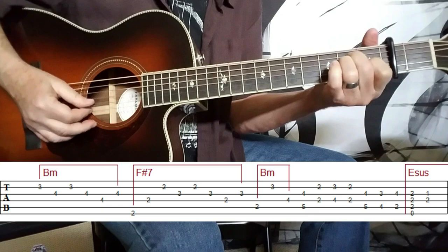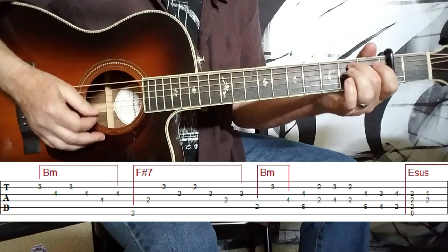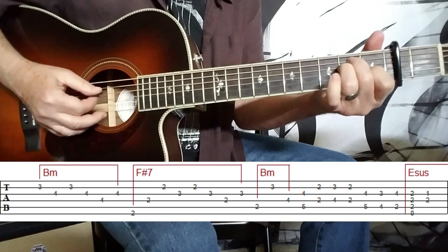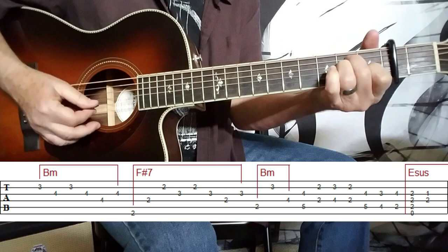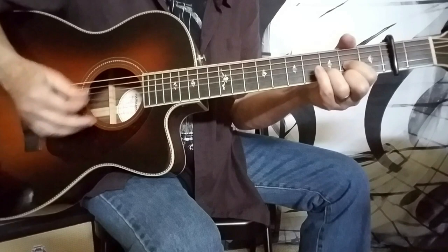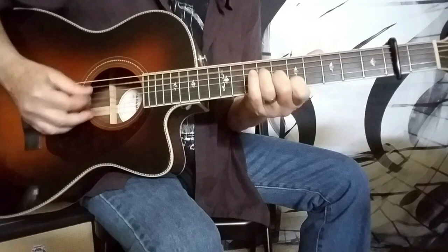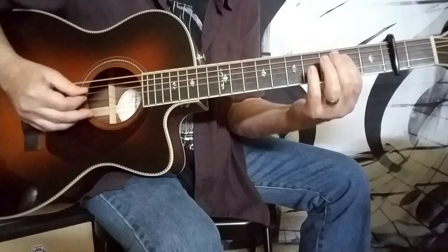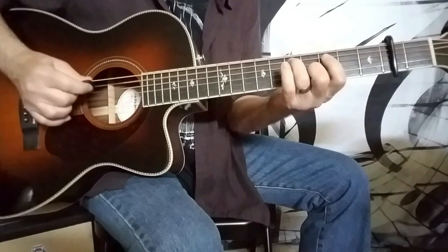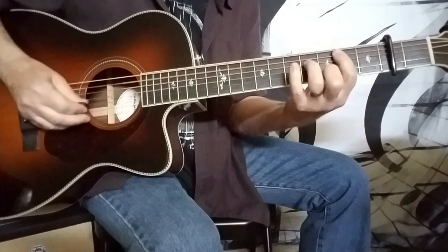So the chord at the end is an E suspended. 2nd fret A string, 2nd fret D string, 2nd fret G string. And I'm not playing the first two strings with this. Hit the top four strings, then release your pinky to the 1st fret on the G string. And I just play those two notes. The D string and the G string, okay?